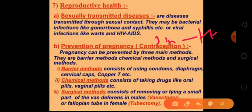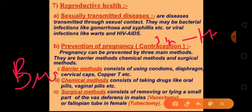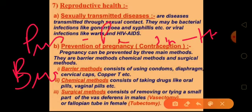Bacterial infections include gonorrhea, which is caused by the bacterium Neisseria. The victim feels a burning sensation and pain during urination. This disease causes inflammation of the mucous membrane of the urogenital tract, rectum, throat, and eyes. There may be pus in the penis and excessive secretion from the vagina. It is spread by sexual contact, but the good thing is this disease is easily curable with antibiotics.